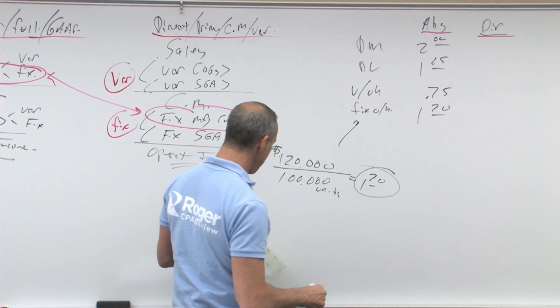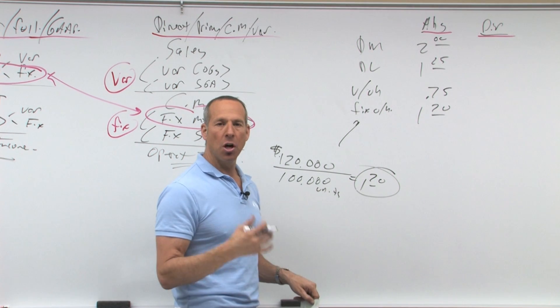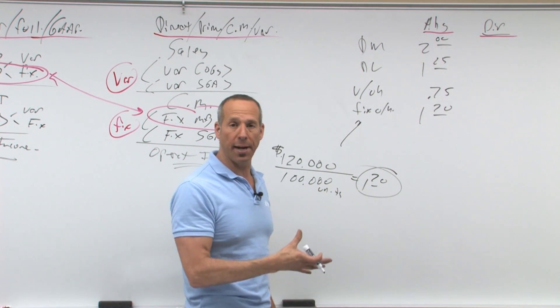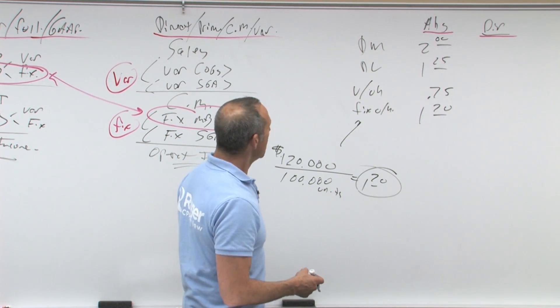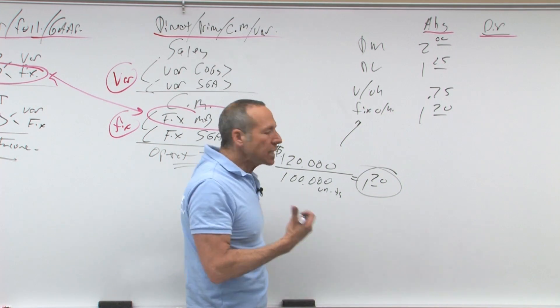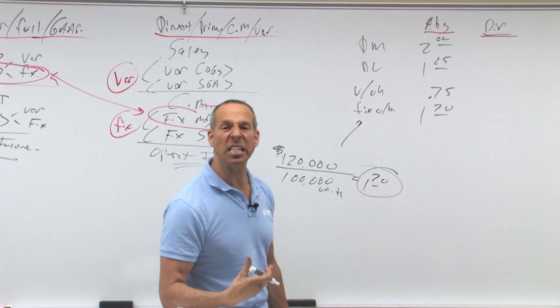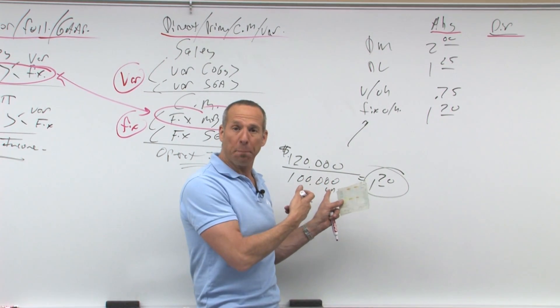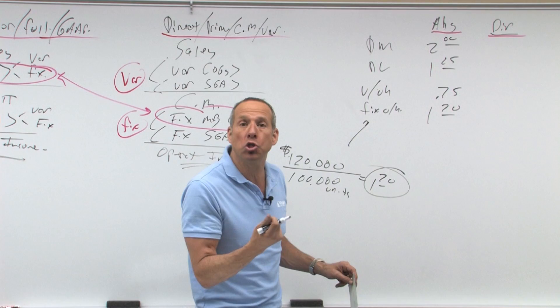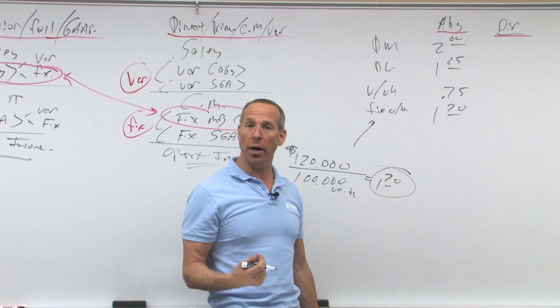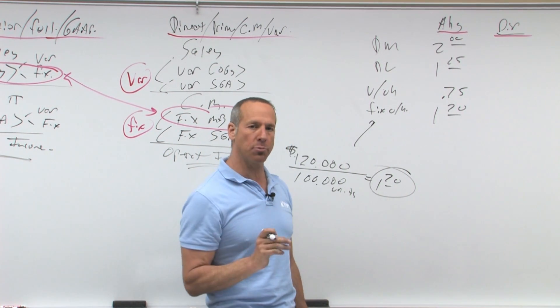So, that is how much per unit is fixed overhead. Now, under absorption costing, it's called absorption because whatever doesn't get sold, that part of the overhead will get absorbed into ending inventory. It doesn't get expensed, it gets absorbed into ending inventory.